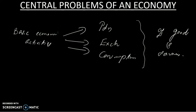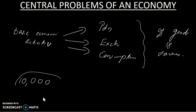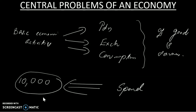What is the main problem of an economy? Scarcity — scarcity of resources. For example, one salary is 10,000 rupees. This 10,000 rupees is a limitation; the spending amount is limited to 10,000 rupees. In this case, the economy faces a restriction. Scarcity of resources is the main problem of an economy. Resources are limited.